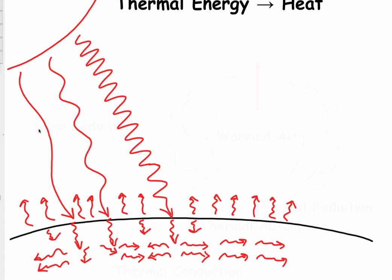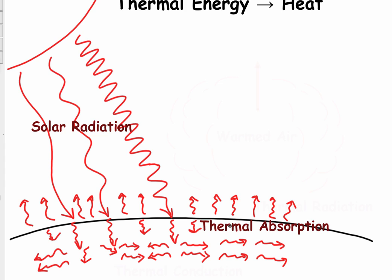Looking at this sketch: solar radiation comes from the Sun and is absorbed in the form of thermal energy — so thermal absorption occurs. Solar radiation heats the surface of the Earth, and the surface absorbs that thermal energy. This thermal energy is then conducted — conduction occurs — which is energy moving through solid matter.